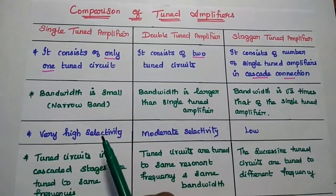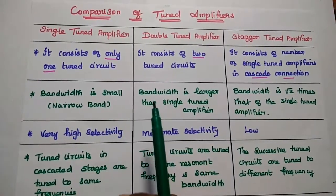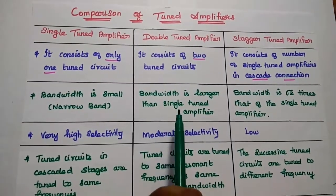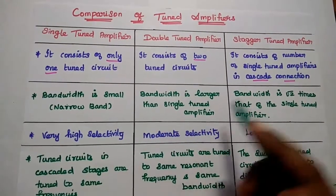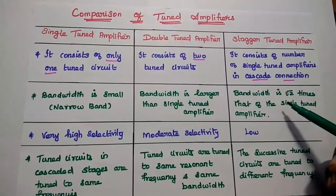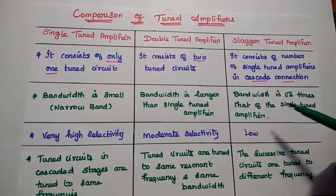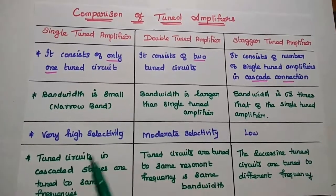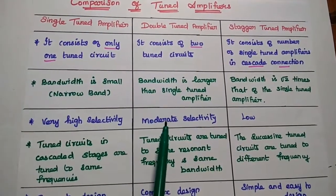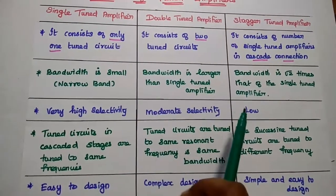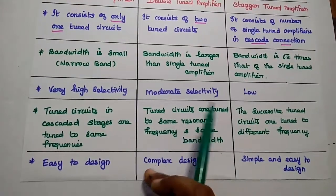In single tuned amplifier, the bandwidth is narrower — that means smaller. For the double tuned amplifier, bandwidth is larger than single tuned amplifier. For the stagger tuned amplifier, the bandwidth is square root two times that of the single tuned amplifier. Single tuned amplifier has very high selectivity; double tuned has moderate selectivity; stagger tuned has very low selectivity — that means bandwidth or frequency selectivity.